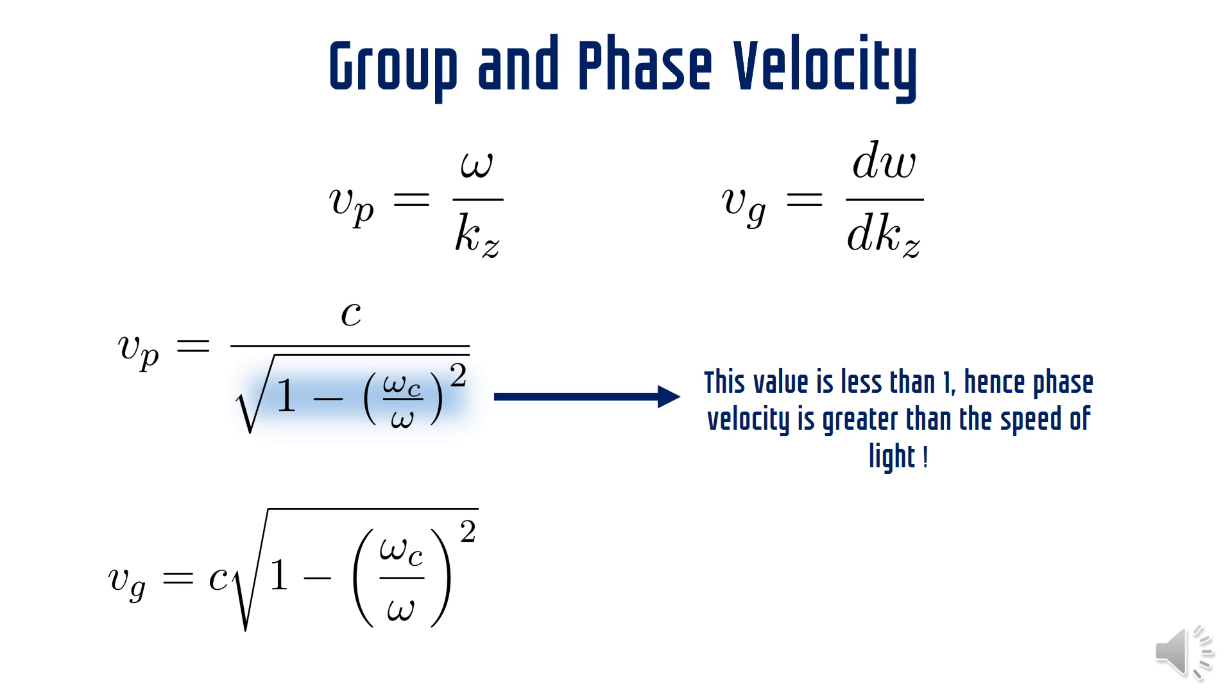Now this comes as a relief for the scientific community and for all of us. Also note that the product of phase and group velocity always comes out to be equal to c squared. So if you have the value of one of the velocity, then you can always find the other velocity.